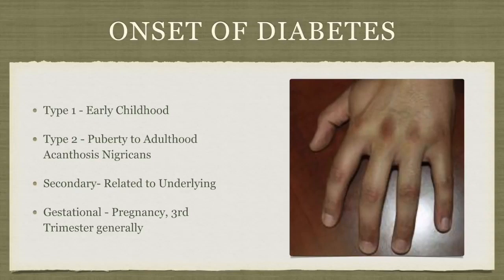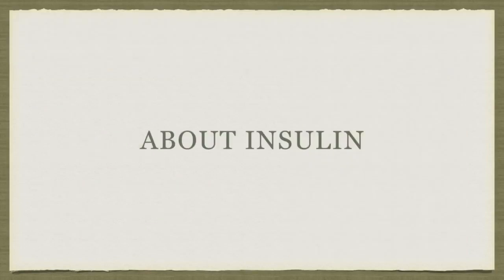There is a secondary form of diabetes related to disease or drugs, which is managed by treating the underlying condition or medication. Gestational diabetes occurs in pregnancy, generally in the third trimester. One complication of diabetes during pregnancy is very large babies, on the order of 10 pounds.